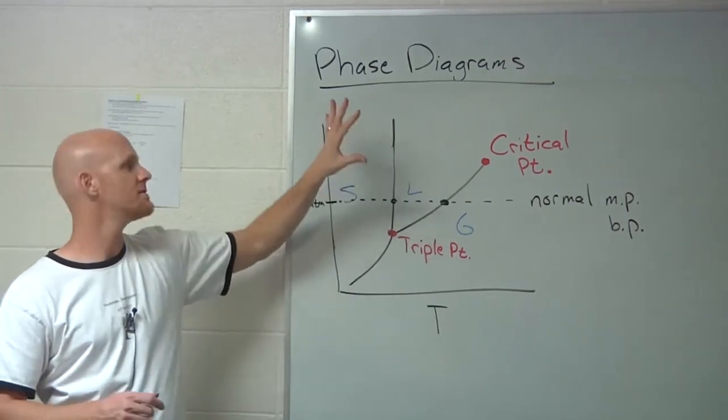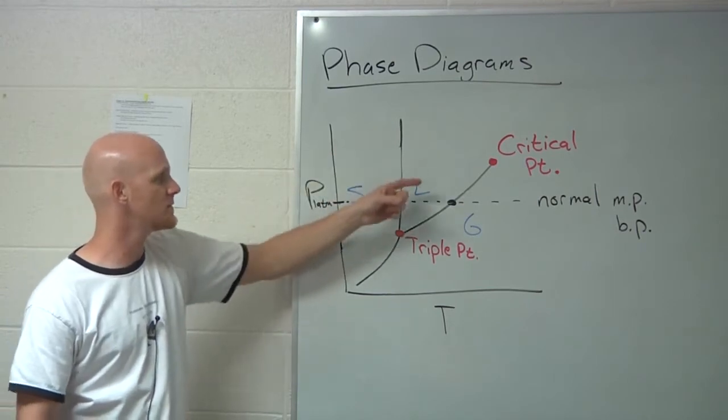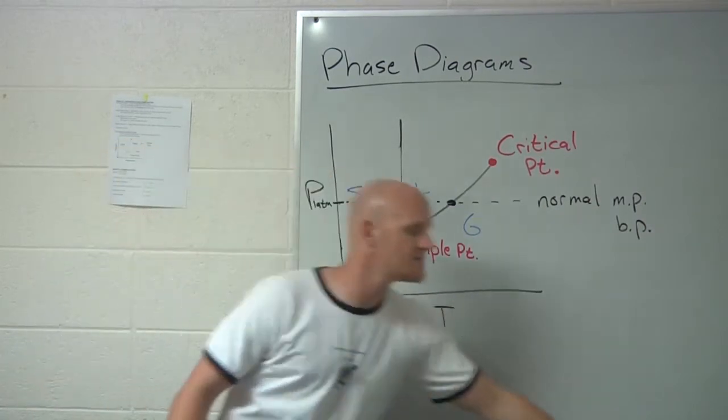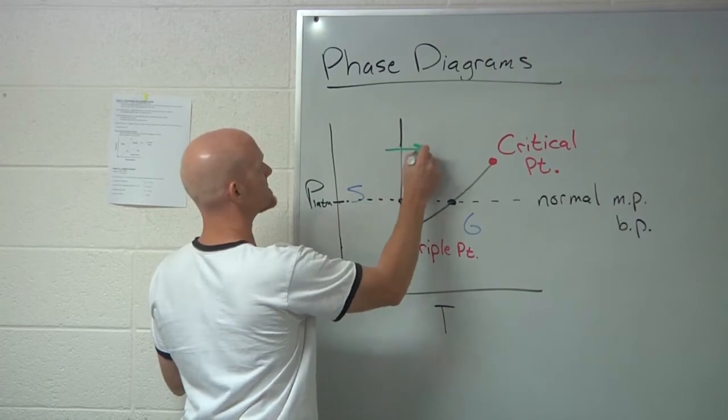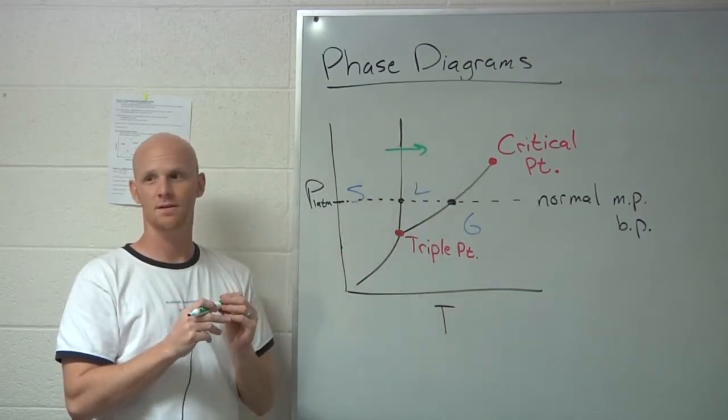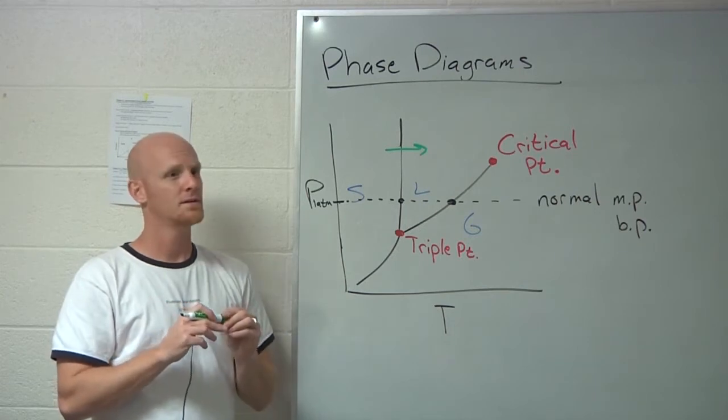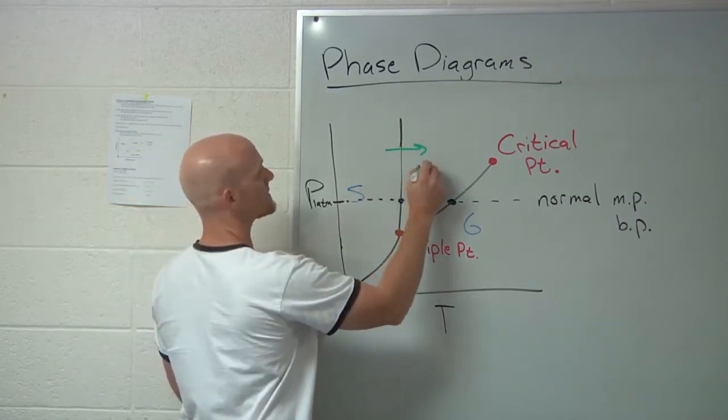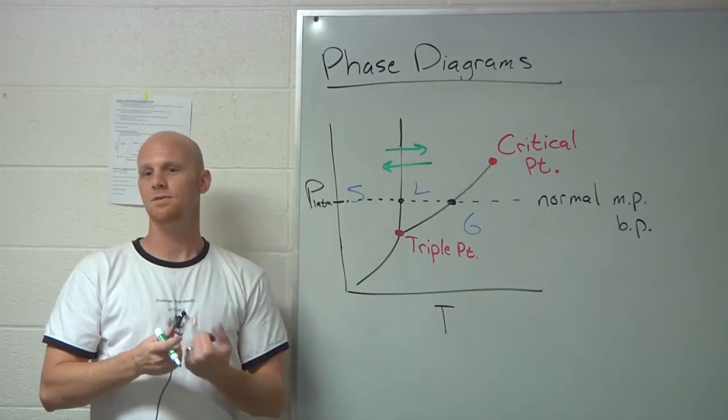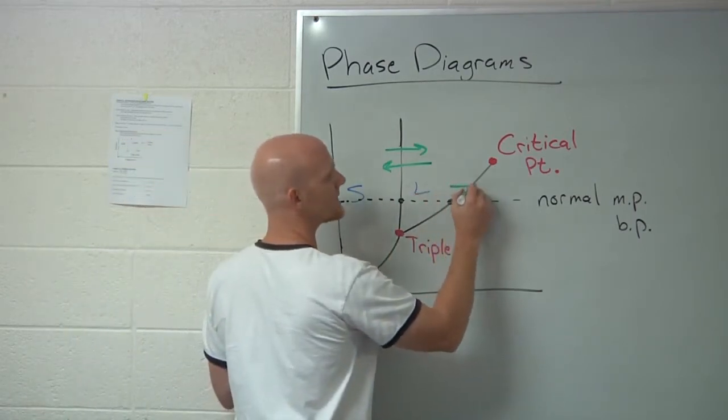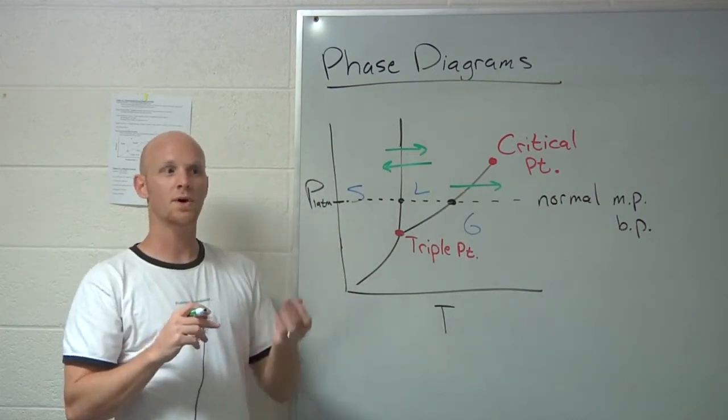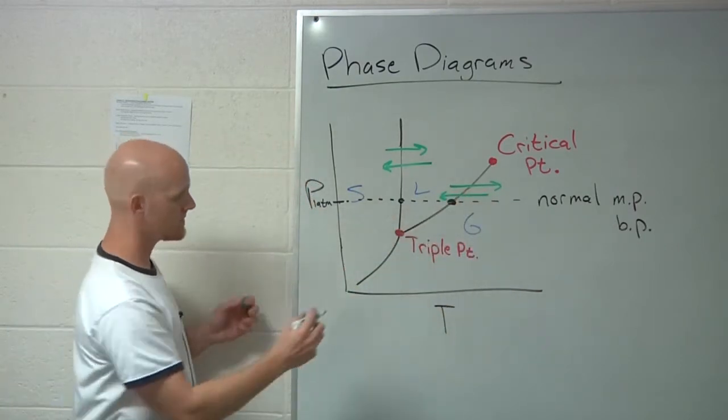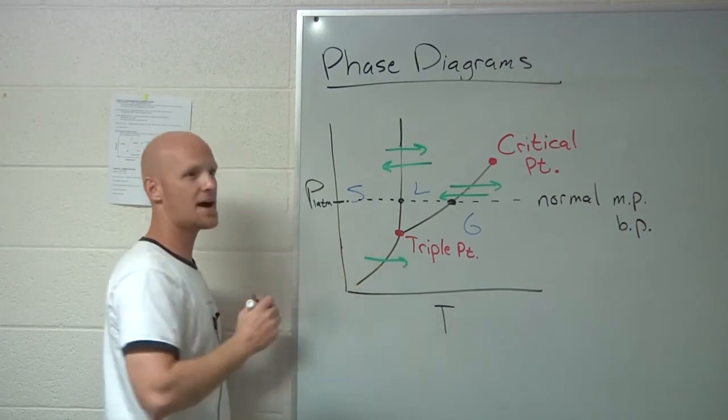This is what a normal compound's phase diagram looks like. You should be able to identify these lines of equilibrium: solid-liquid, liquid-gas, solid-gas. You should be able to identify all the different phase changes that happen to them. If I drew again this arrow, what phase change would that be? Solid to liquid is called melting, which is also called fusion. If I went from liquid to solid, that's called freezing or crystallization. Liquid to gas is called boiling or vaporization. Gas to liquid is called condensation.